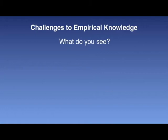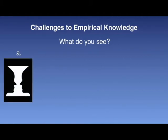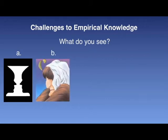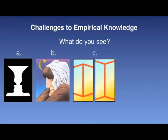Graphic A shows either a vase or two faces, depending on how you actually look at it. Graphic B shows a beautiful young lady facing away from the screen, or a profile of an old lady with a scarf over her head. Diagram C indicates two different vertical lines — the question is, which is the longer of the two? The answer is they are both the same length; our sense of vision is being fooled because of the distractors at the ends of the lines. Finally, diagram D presents a question: what is wrong with this particular diagram?